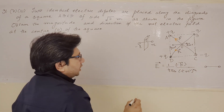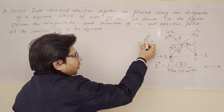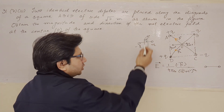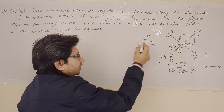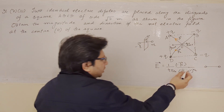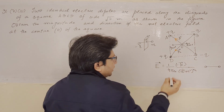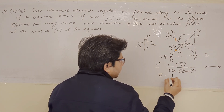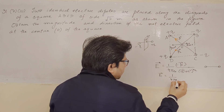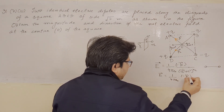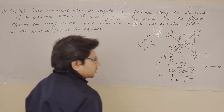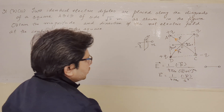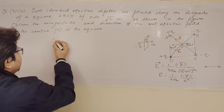If we want to calculate the electric field at the midpoint of the dipole, we put r equals zero in this formula. When r equals zero, the formula becomes E equals one upon four pi epsilon naught, minus P upon a to the power three. This is the formula we will use, where a is the half-length of the dipole.